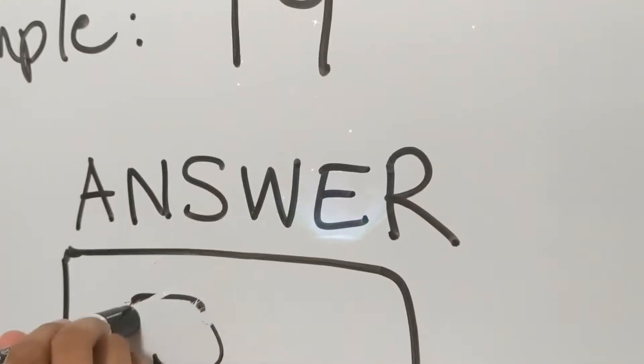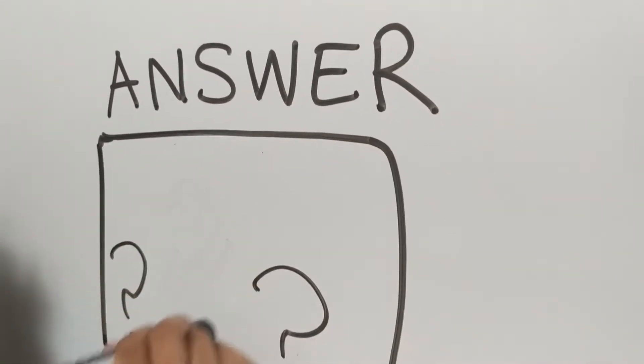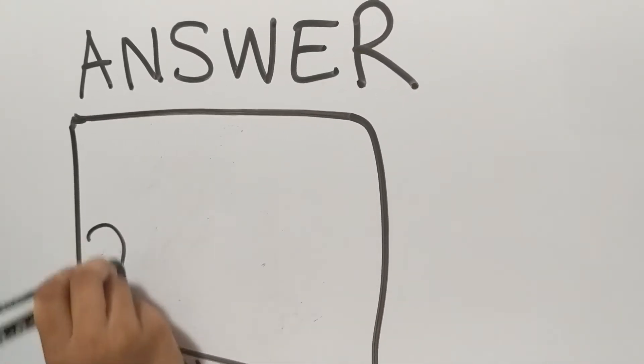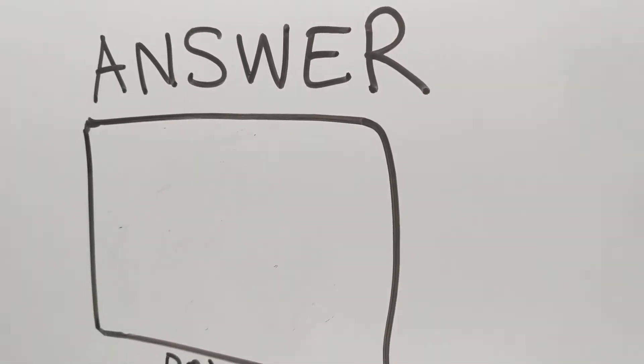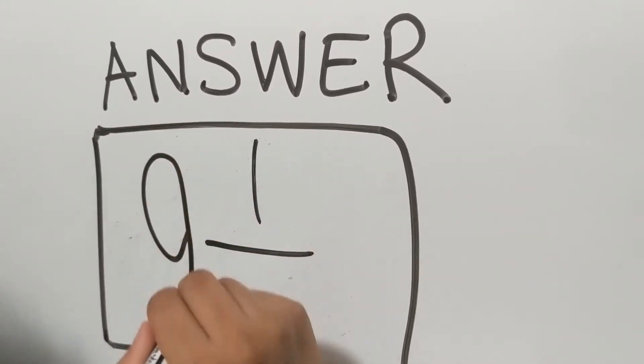Now let's get rid of these question marks. We got our answer. Let's put it in our answer box. Right here. 9 and a half.